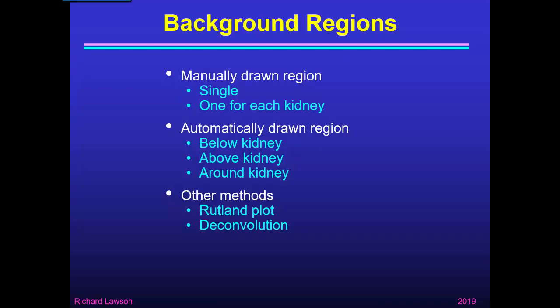Background regions can be drawn in several ways. They can be drawn manually — either a single region applying to both kidneys, or one background region per kidney. They can be drawn automatically, either below, above, or around the kidney. Other methods I'll mention are the Rutland plot and deconvolution.